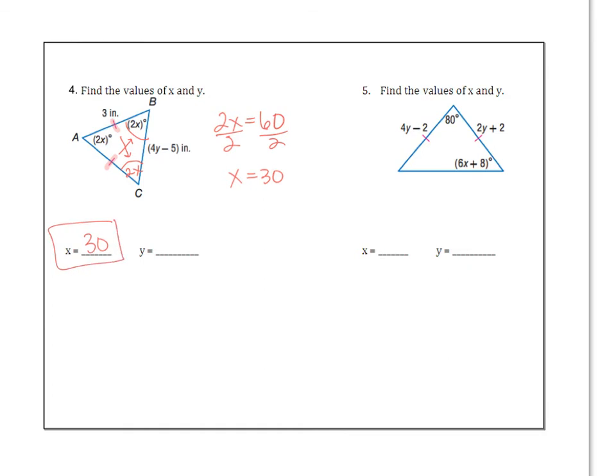To find Y, what I would probably do is use this side BC. It's going to be congruent to all of the sides because if all three angles are equal, all three sides will be equal. And so what I decided to do is 4Y minus 5 equals 3. This side is going to equal this side because all three sides will actually be the same. Add 5, 4Y equals 8. Divide by 4, Y equals 2.